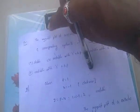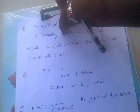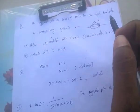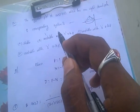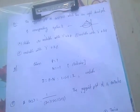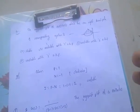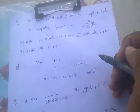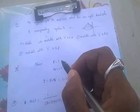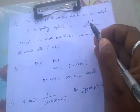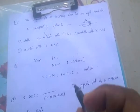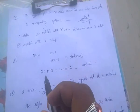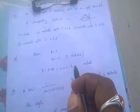Next problem: the Nyquist plot of G(S)·H(S) which has one right-hand pole. One right-hand-side pole means P = 1. The encirclement is in the clockwise direction, so N = -1. Using N = P - Z: Z = P - N = 1 - (-1) = 2. Since Z is not 0, the system is unstable.